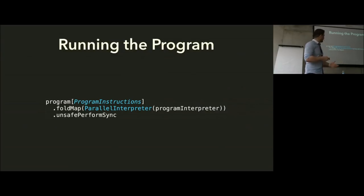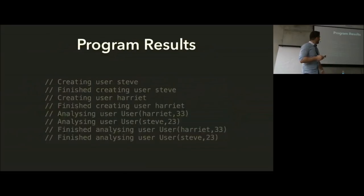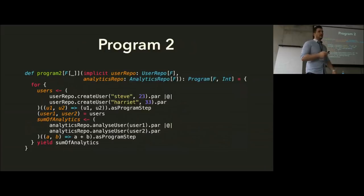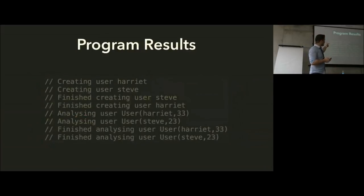In program one, we create Steve, Steve finishes creating, then we create Harriet, Harriet finishes creating, then we analyze both and they both finish. You can see the first step is sequential, then the second step is sequential, then the last two steps run in parallel. In the second example where we wanted to create users in parallel, we can see Harriet kicks off, then Steve kicks off, and then both finish — Thread.sleep confirms they ran in parallel. Then because of the flat-map, the next two analysis steps are forced to happen afterwards, also in parallel.